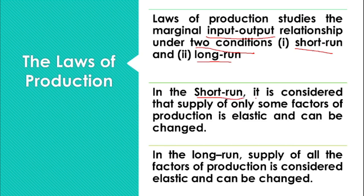When there is a short run time period, how does the input-output relationship come into play? What happens in the short run? The major characteristic of the short run period is that the supply of the factors of production cannot be elastic. That means all of the factors of production cannot be changed in the short run period. If you want to increase the factors of production in the short run, it may not be possible because their supply is not elastic.